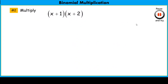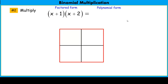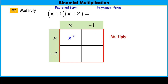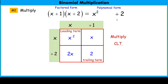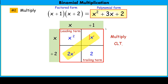Now you try it — please multiply the two binomials x plus 1 times x plus 2 using the area model. Going from factored form to polynomial form: I put x plus 1 along the top and x plus 2 along the side. Multiplying each sub-area: x times x is x squared, 1 times x is x, 2 times x is 2x, and 1 times 2 is 2. Combining like terms, our leading term is x squared, trailing term is 2, and the two linear terms — 2x plus 1x — give us 3x. The result is x squared plus 3x plus 2.